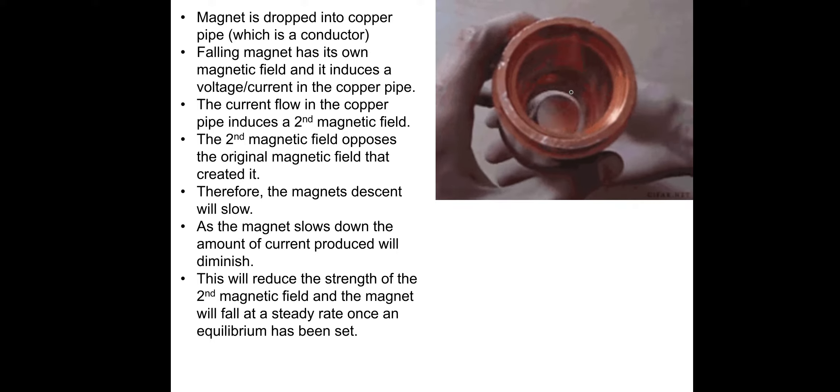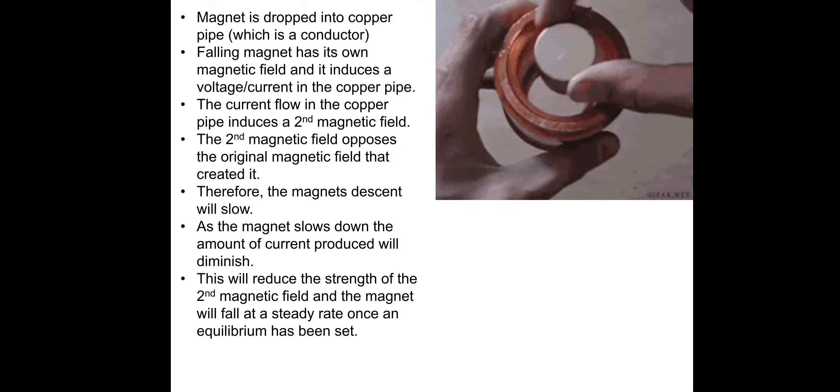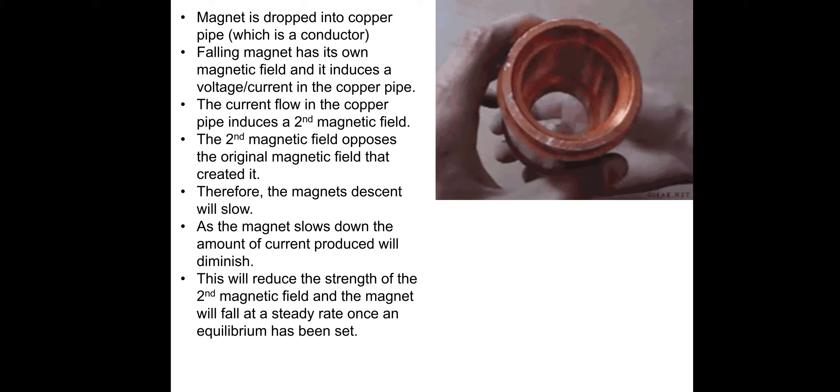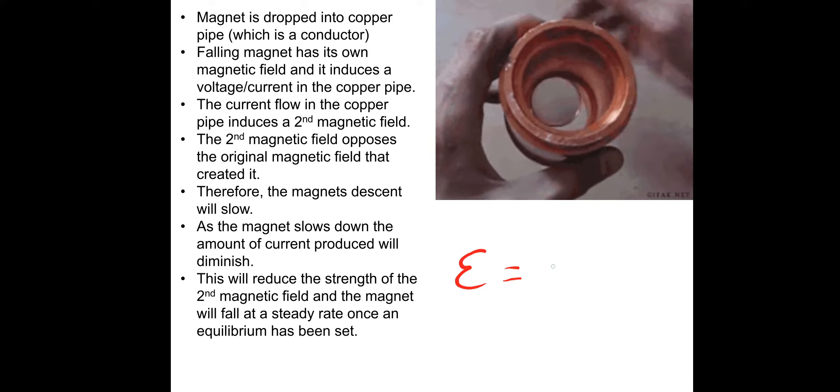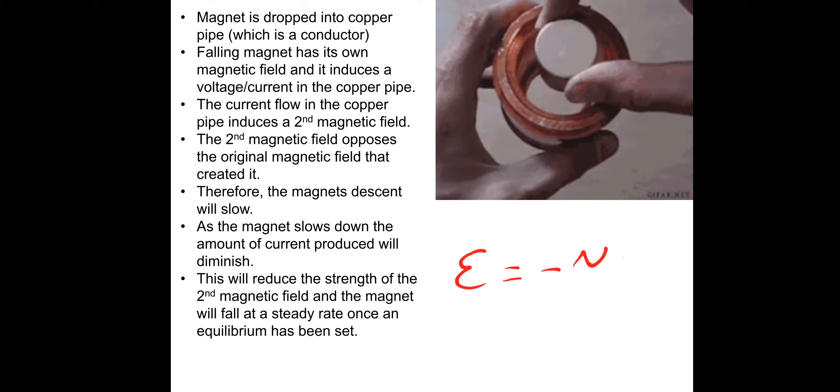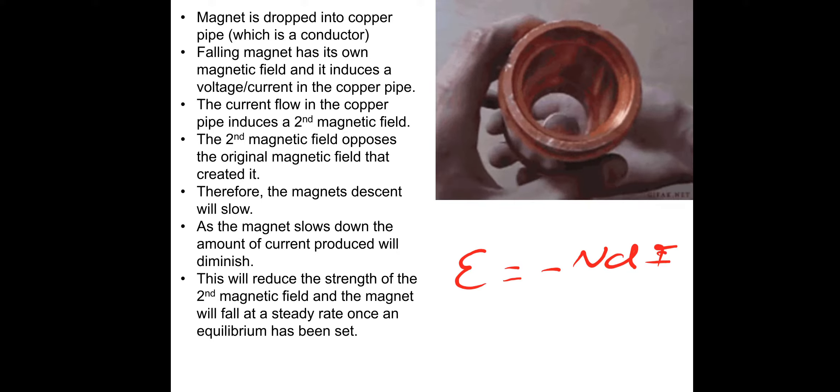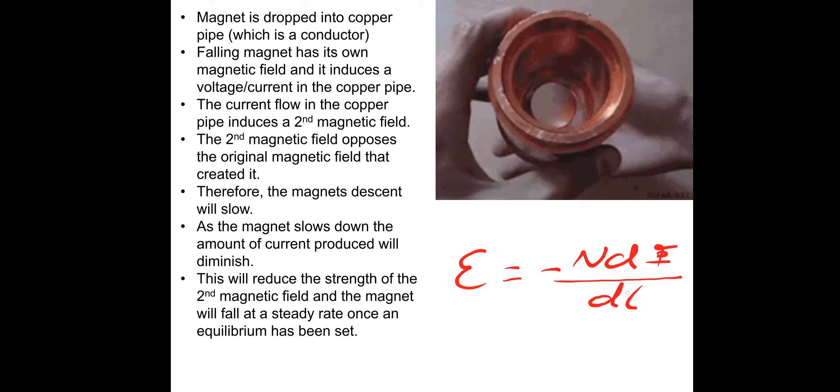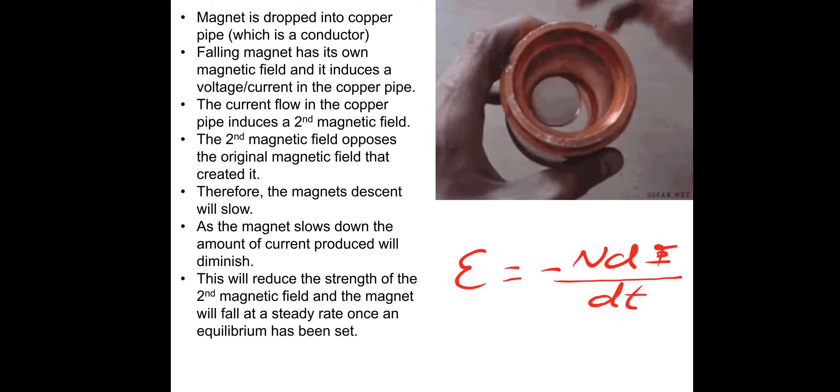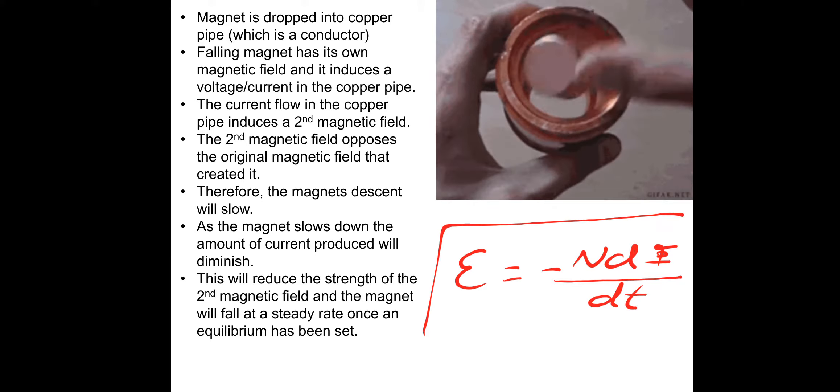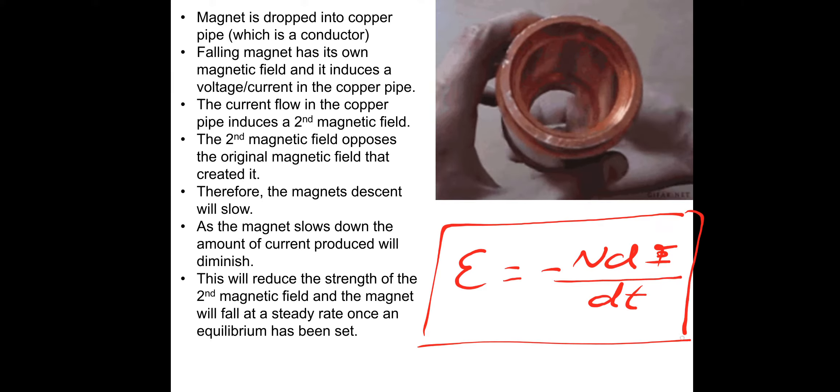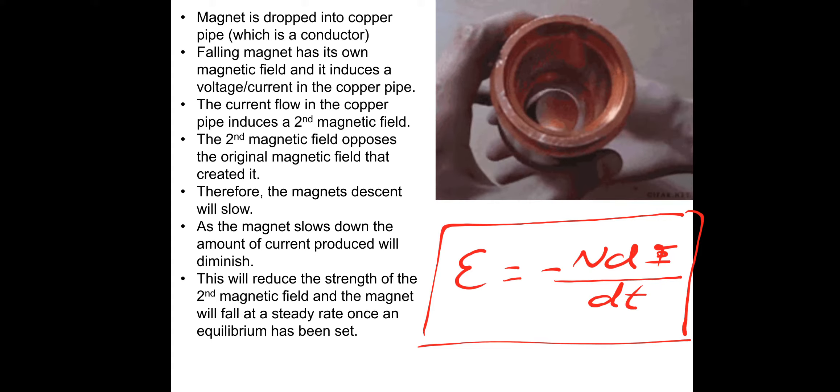And the second magnetic field that will be produced in this situation opposes the original magnetic field that created it in the first place. Hence the equation: EMF is equal to minus N change in flux over change in time. It's the idea of the opposing magnetic field that produces this negative sign. Okay, let's move on.